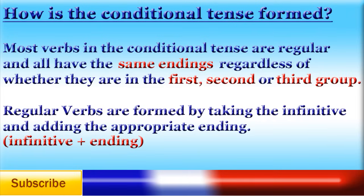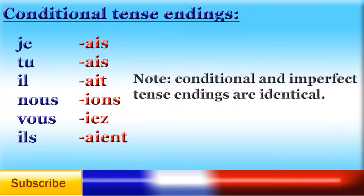How is the conditional tense formed? Most verbs in the conditional tense are regular, and all have the same endings regardless of whether they are in the first, second, or third group. Regular verbs are formed by taking the infinitive and adding the appropriate ending. As a side note, for those familiar with the imperfect and future tenses, the conditional is basically formed by adding the imperfect endings to the future stems — the stems are identical in the future and the conditional, and the endings are identical in the imperfect and the conditional. Here are the conditional tense endings.